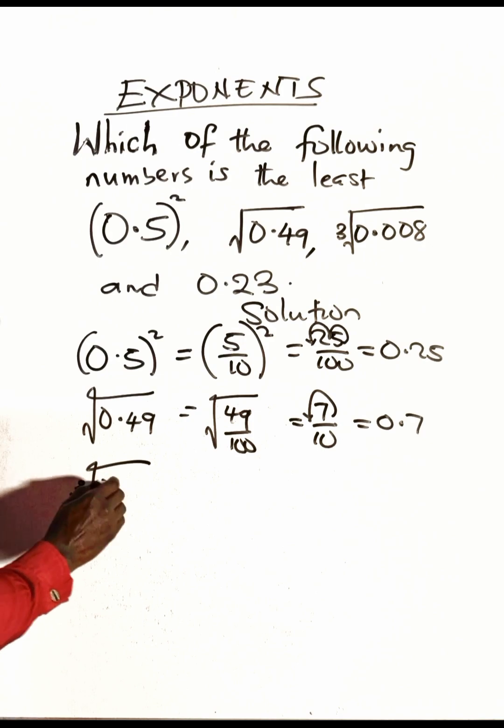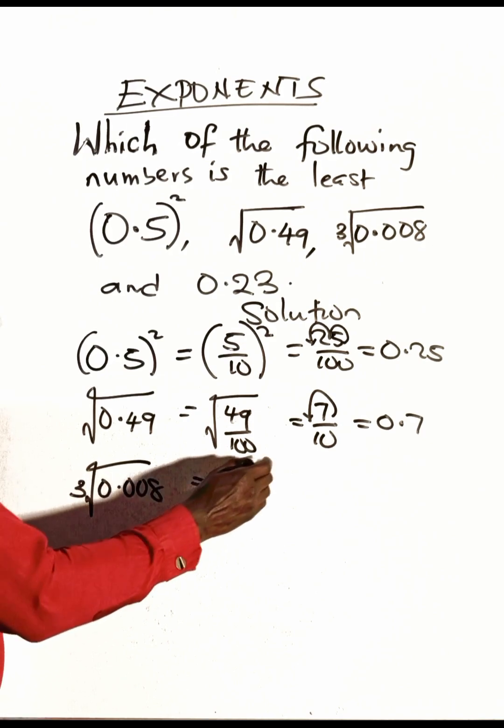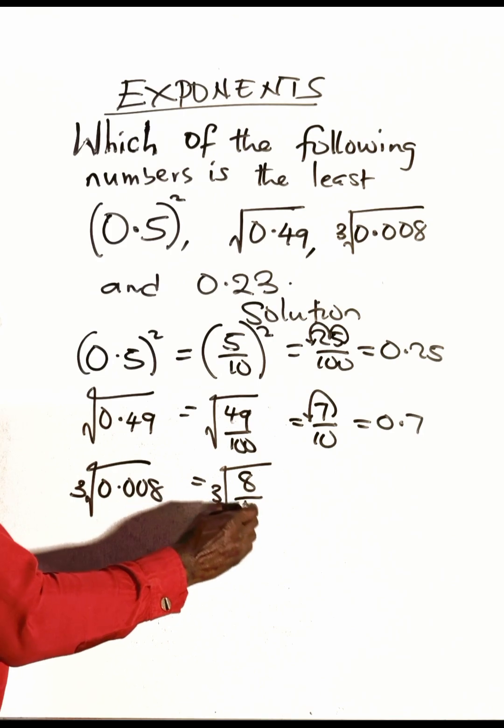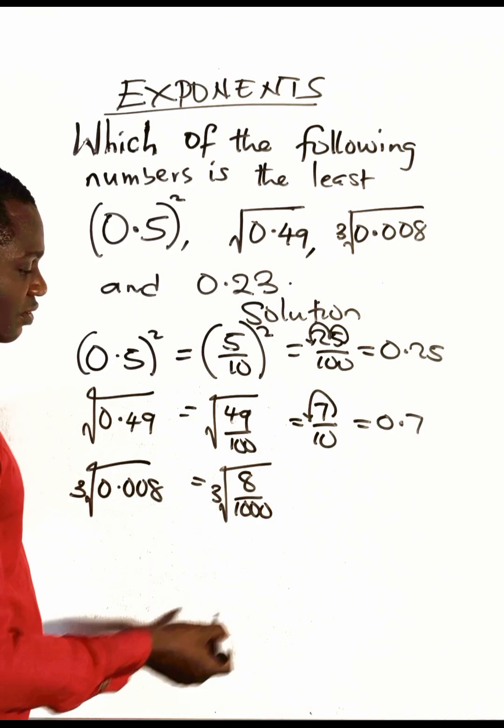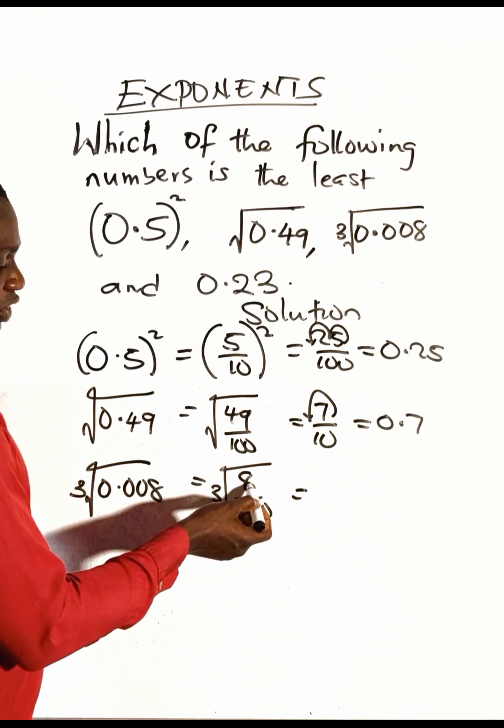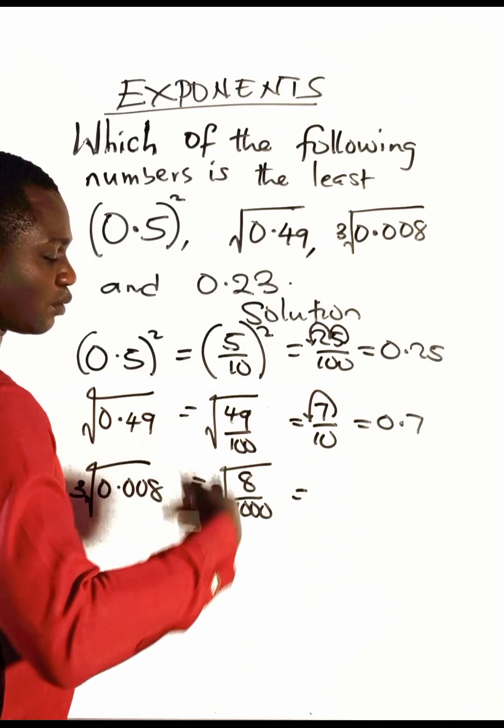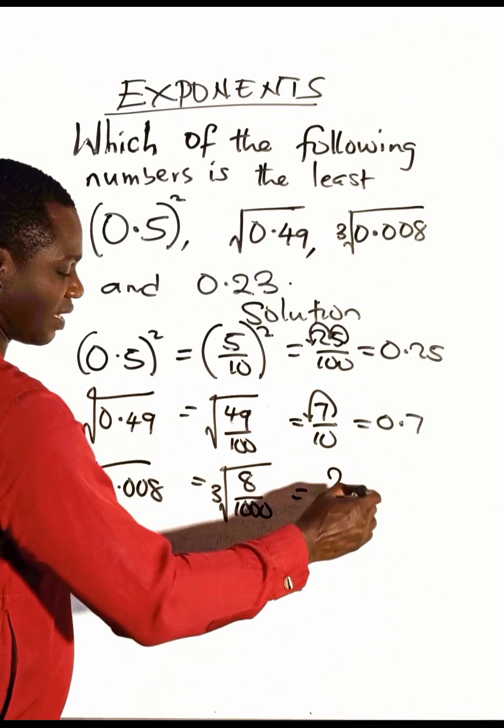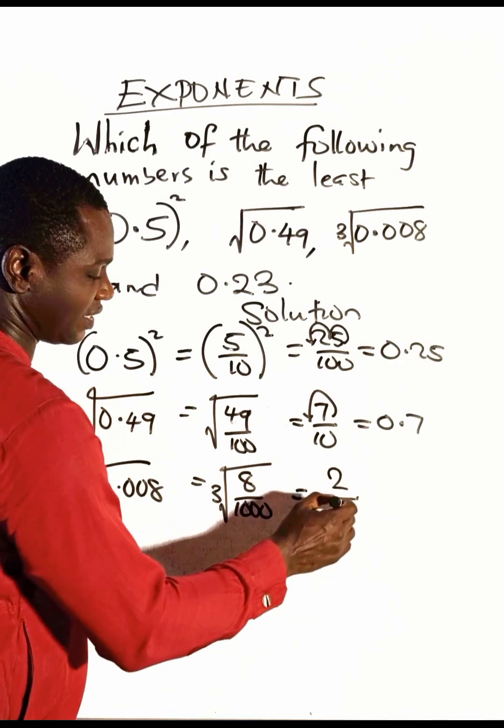Let's take a look at this also: the cube root of 0.008. This simply means the cube root of 8 over 1000 when we change it to a fraction. What is the cube root of 8? The number that will multiply itself and itself to give you 8, which is 2. And the cube root of 1000 is 10. If you change this back to decimal, you will have 0.2.